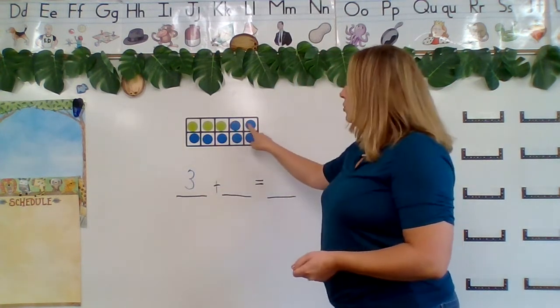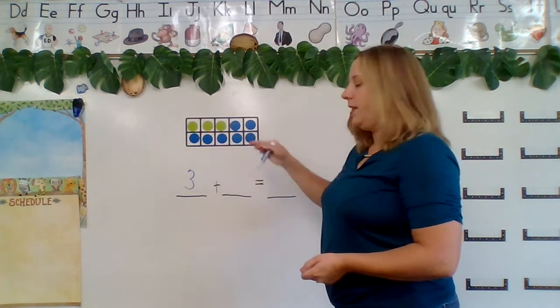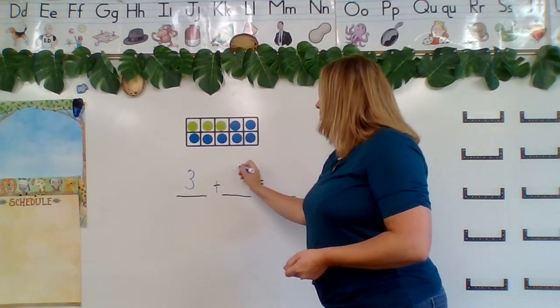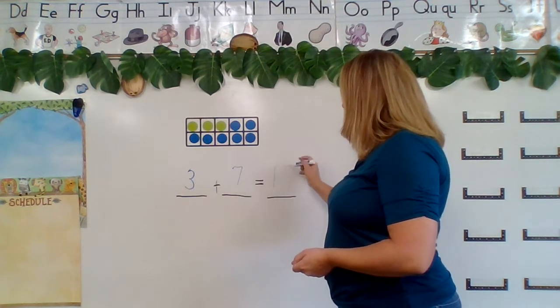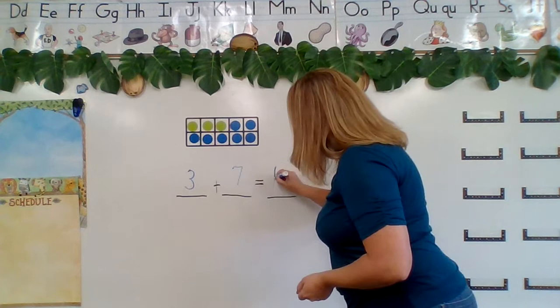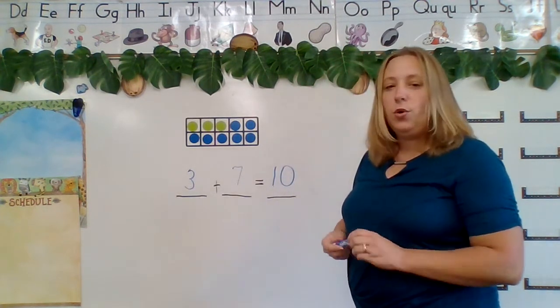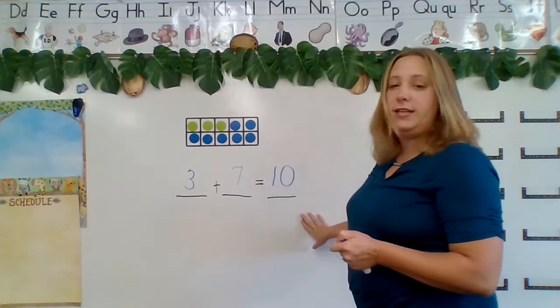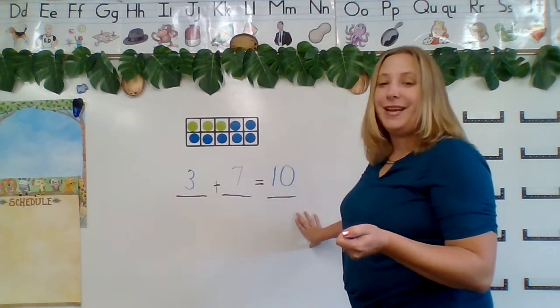And then we have 1, 2, 3, 4, 5, 6, 7. So I have 3 plus 7 equals 10. And do you remember what I told you? All of our answers today are going to equal 10 because we're learning different ways to make 10.